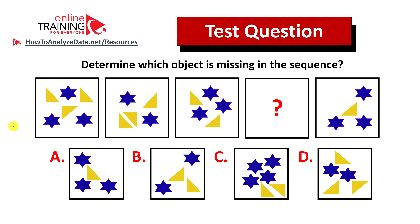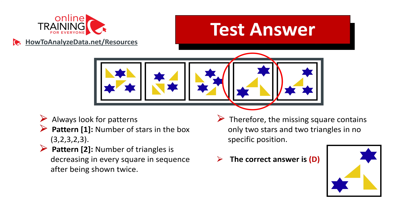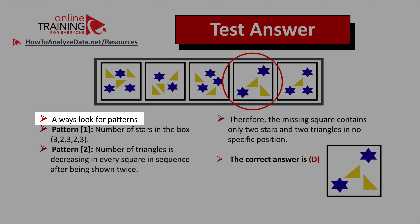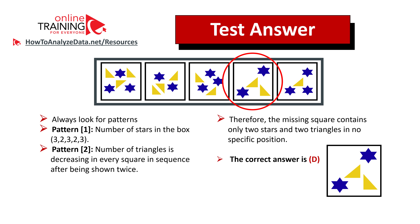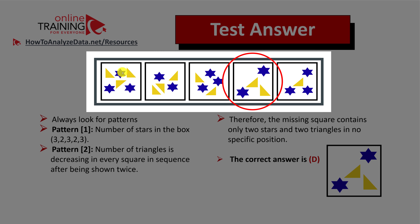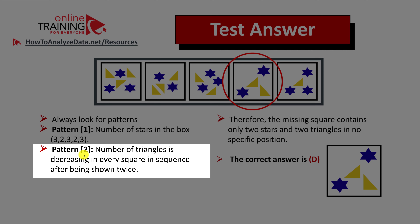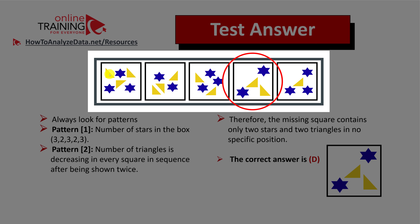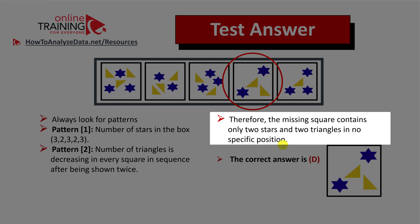Did you figure out the answer? Let's continue to see how we can solve and get to the correct solution together. My advice is always look for patterns. There are two patterns here. The first pattern is the number of stars in the box — the first box has three stars, then two stars, then three stars again, then two, so the next one is three again. So the missing object will definitely have two stars. There's also a pattern of decreasing triangles — the number of triangles decreases after being shown twice. Objects one and two both have three triangles, then objects three and four have two triangles. So the missing object will also have two triangles, and then the last one will have one. The missing square contains only two stars and two triangles in no specific position. So the correct answer here is choice D.